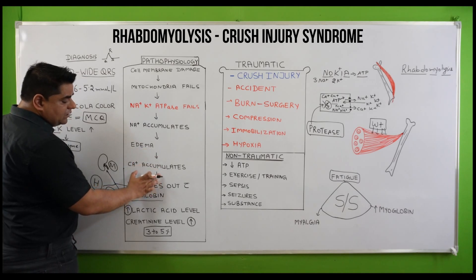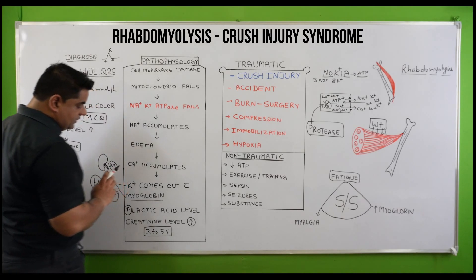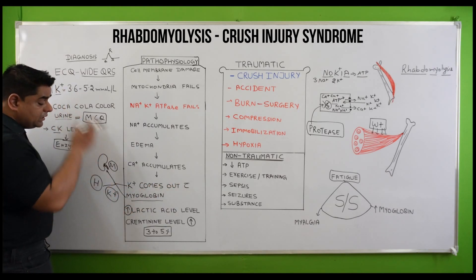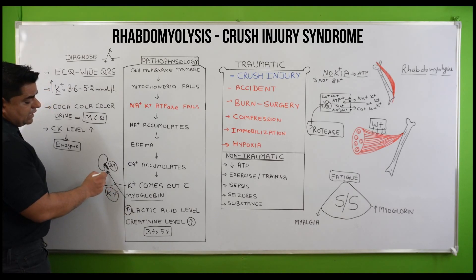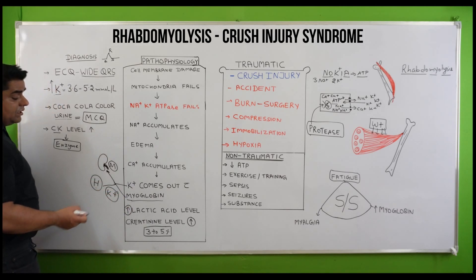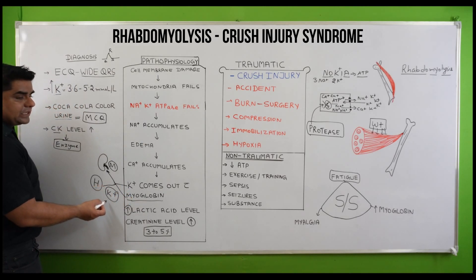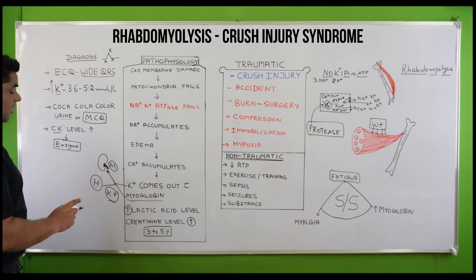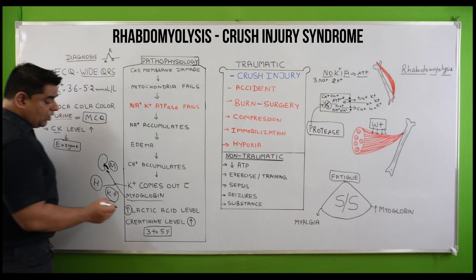Potassium pump failure causes edema, and calcium accumulation causes further damage to mitochondria and further decrease in ATP. Potassium and myoglobin come out; myoglobin is carried by the blood toward the kidneys, which can get damaged — renal failure can occur due to high myoglobin levels. Potassium in the plasma causes hyperkalemia, which is very harmful for the heart, leading to dysrhythmias and arrhythmias.